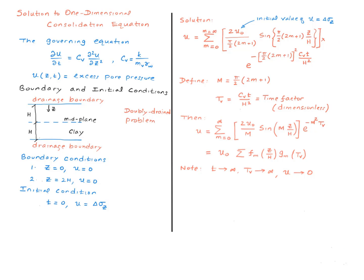To simplify the expression a little bit, we introduce another little counter here, big M, which is defined as this. And a second variable called the time factor. Time factor is defined as c sub v times little t over h squared. And it turns out this quantity, the time factor, is a dimensionless quantity.